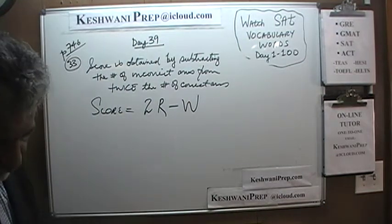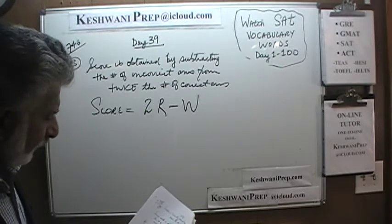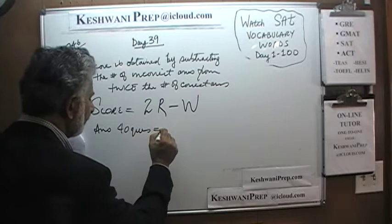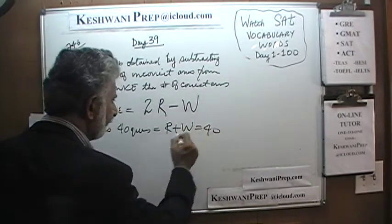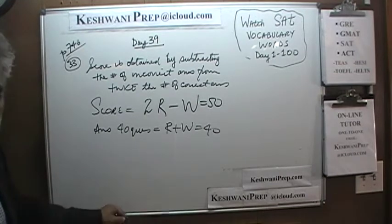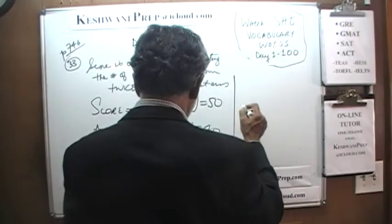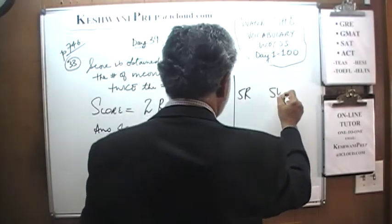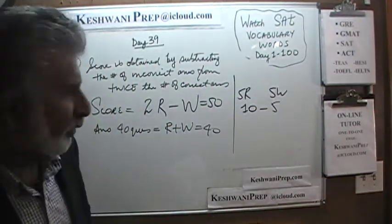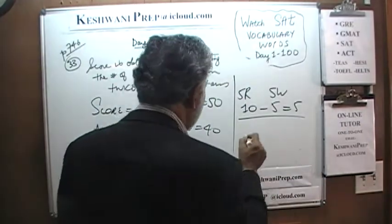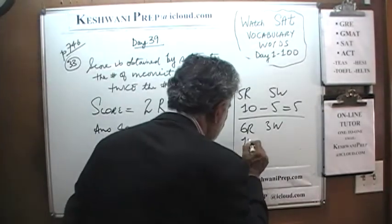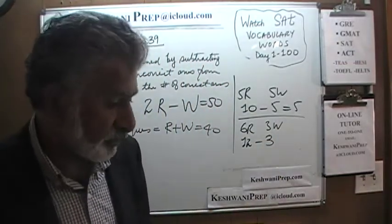They further go on to tell us that this particular person answered 40 questions. In other words, the total number of right answers and wrong answers has to be 40. And we are told that the score was 50. Two equations, two unknowns — very straightforward. For example, if you got five right and five wrong: five right gives ten points, five wrong takes away five — score would be five. If six right and three wrong: twelve points minus three — score is nine. That's the idea.